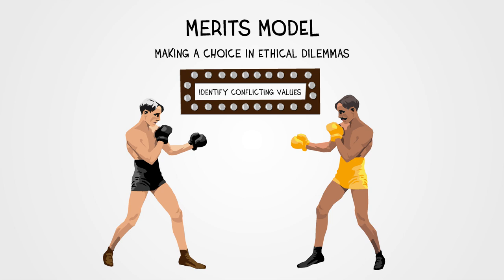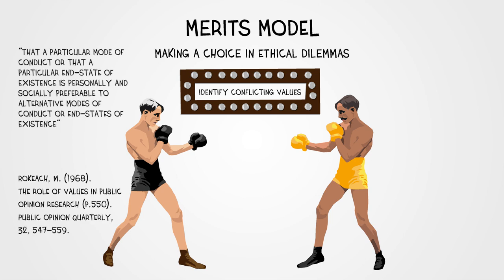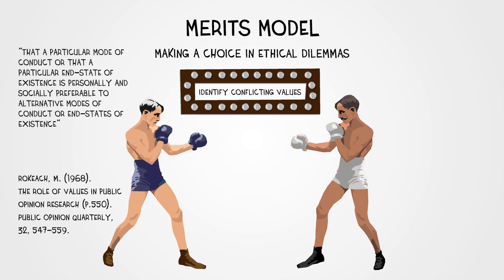Something can be considered a value when we believe that a particular mode of conduct or that a particular end state of existence is personally and socially preferable to alternative modes of conduct or end states of existence. Think for instance about values such as promoting credibility, honesty, transparency, autonomy, or privacy.